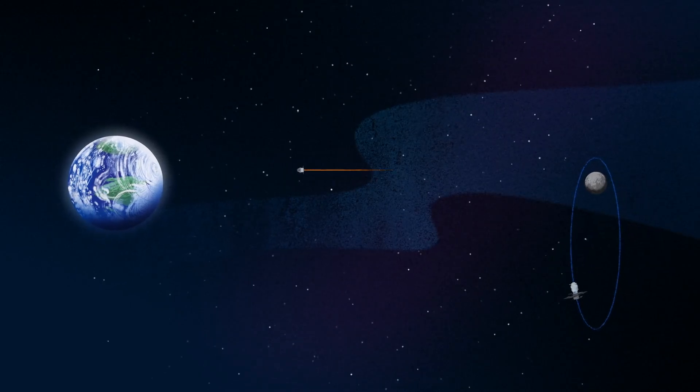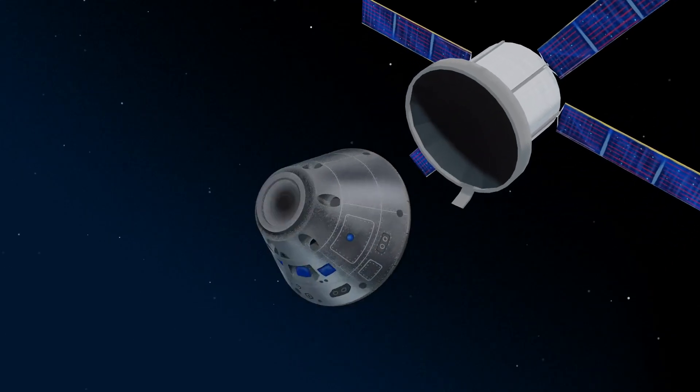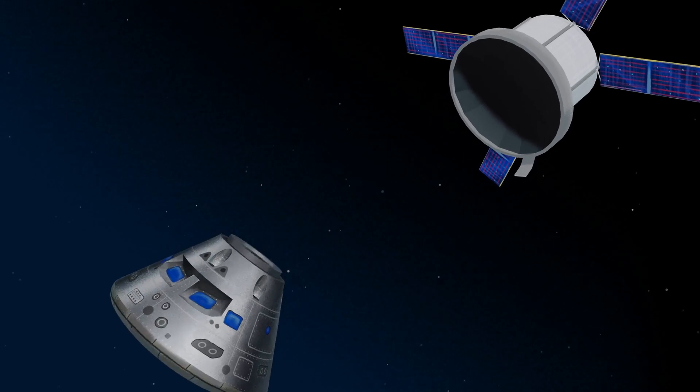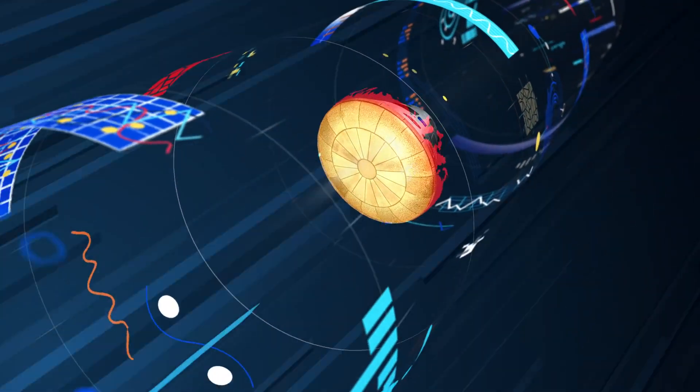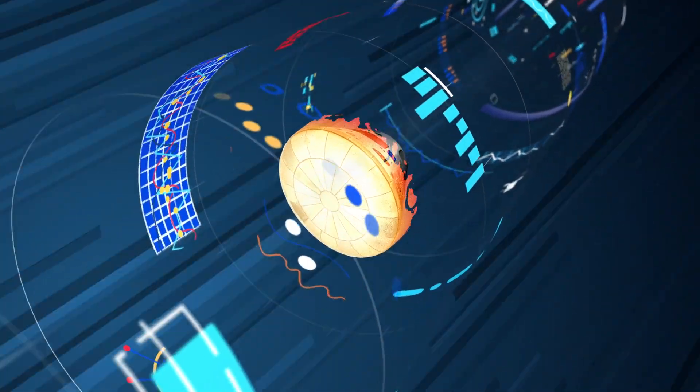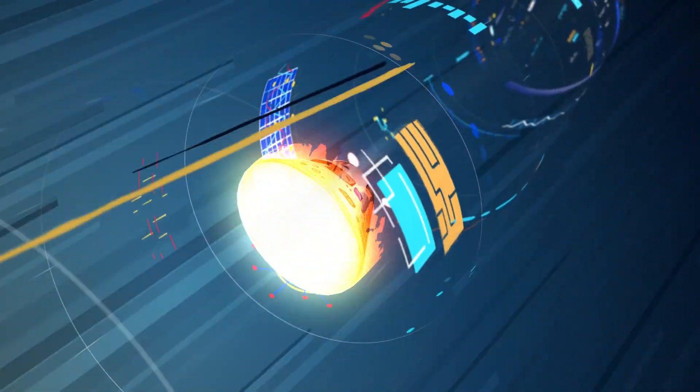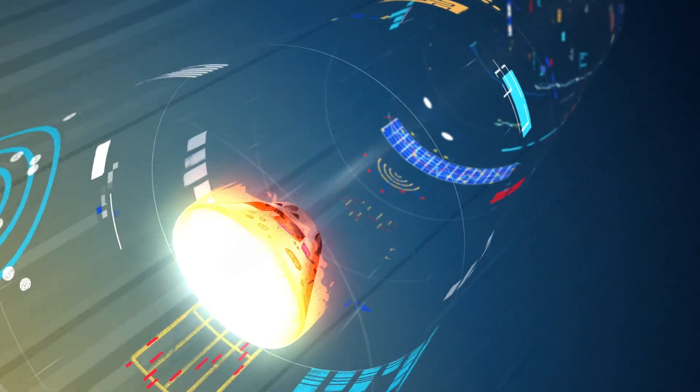As they near the end of this journey, the service module is released, and the crew module is oriented heat shield first. Entering Earth's atmosphere at 25,000 miles per hour, the friction of air slows Orion considerably, while also subjecting it to temperatures of 5,000 degrees.